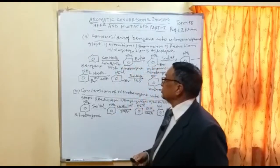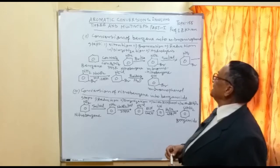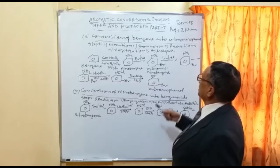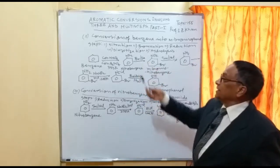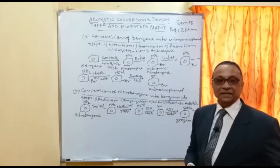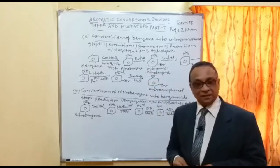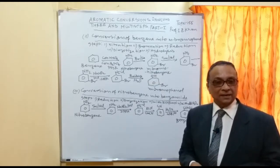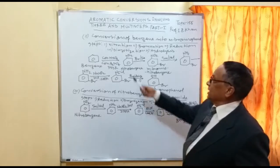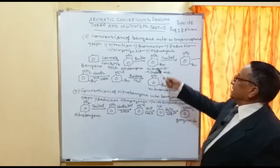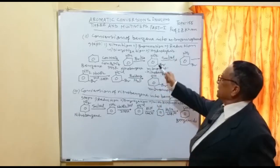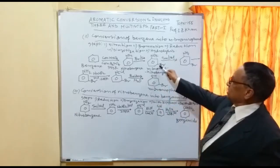Conversion number two is the conversion of benzene into meta-bromophenol, and there are five steps involved. In step one — nitration — the reagent is concentrated sulfuric acid and concentrated nitric acid, the nitrating mixture, which provides the electrophile nitronium ion to get nitrobenzene. Then bromination is done to convert it into the meta-bromo derivative — meta-bromonitrobenzene.